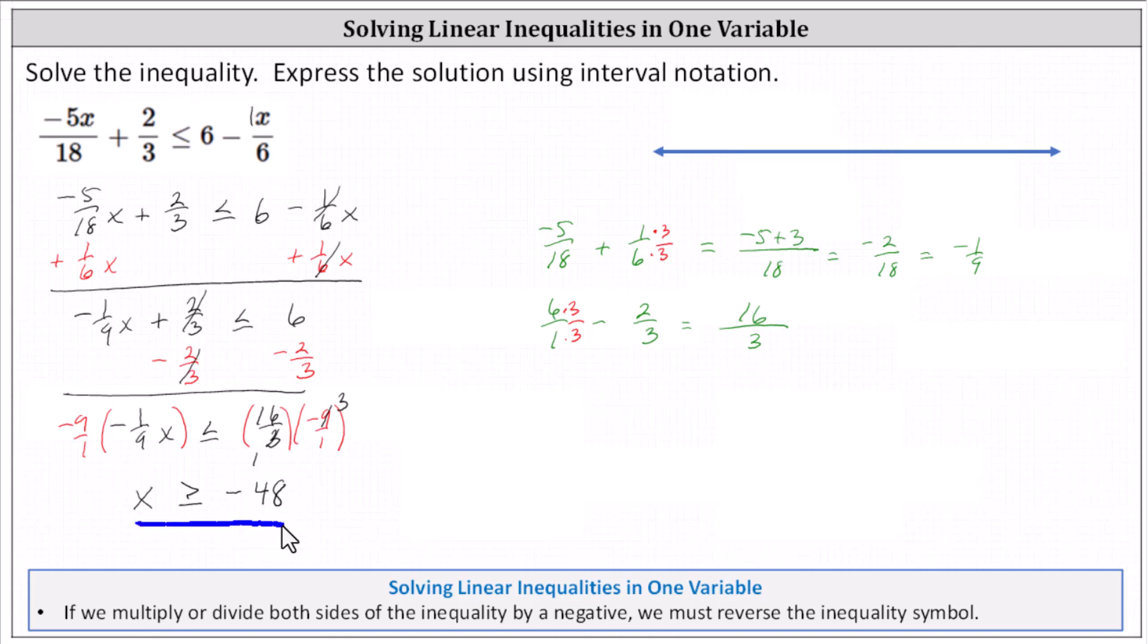We want to express the solution using interval notation. Before we do this though, let's graph this interval on the number line. To graph x ≥ -48, let's say zero is here and -48 is here. -48 is in the interval because of the equal part of the inequality. This indicates we make a closed point on -48, showing -48 is in the interval. And then because we have x ≥ -48, we have an arrow to the right. As we move to the right, we are approaching positive infinity.